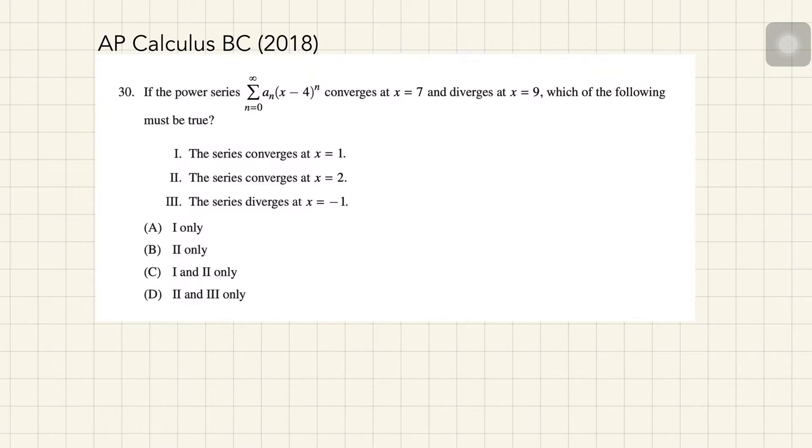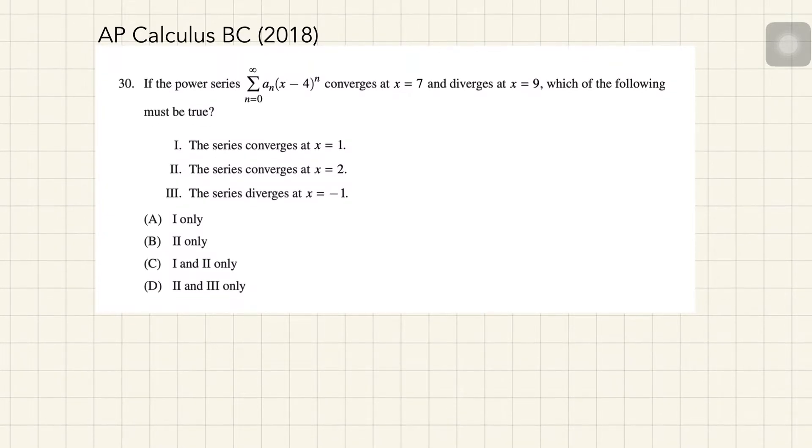Let's examine the statements. Number 1 says the series converges at x equals 1. We can see it's actually possible that if the center point is 4 and it's convergent at 7, then it's possible the series is not convergent at 1.